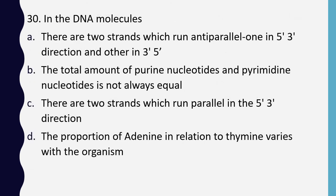Question 30. In a DNA molecule: there are two strands which run anti-parallel, one in 5' to 3' direction and the other in 3' to 5' direction; the total amount of purine nucleotide and pyrimidine nucleotide is not always equal; there are two strands which run parallel in 5' to 3' direction; or the proportion of adenine in relation to thymine varies with the organism. Correct answer is option A: two strands run anti-parallel, one in 5' to 3' and the other in 3' to 5' direction.